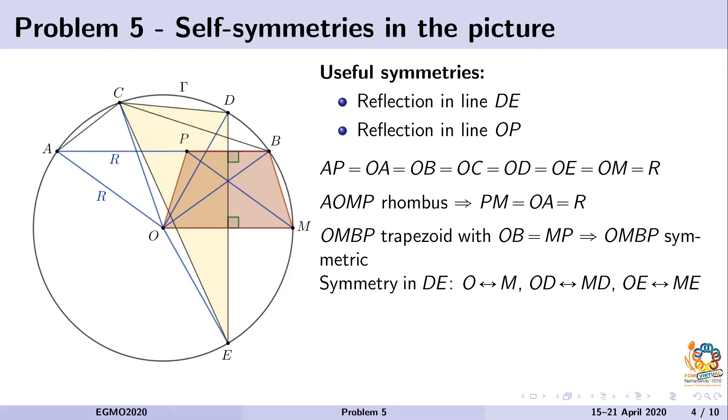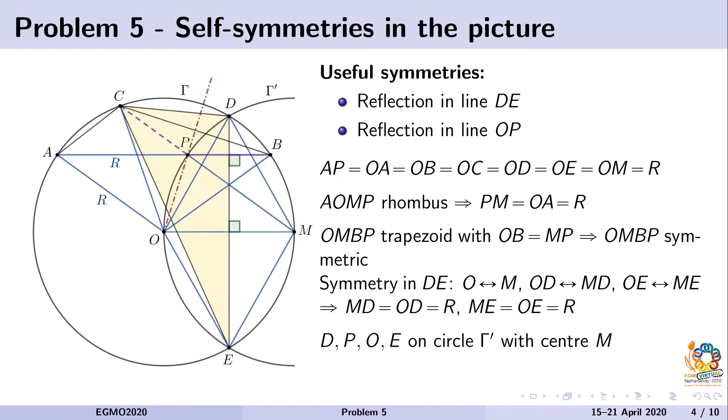point O goes to point M, and thus segments OD equal R, equals OE, equals DM and ME by construction and by symmetry. We get exactly the statement we want to prove: that M is the center of the circle which goes through points D, P, O, E.